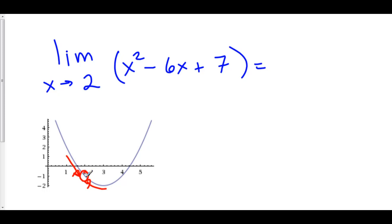Step one, plug it in. What does that mean? We're going to take 2, which is what x is approaching, and we're going to literally plug it in. Two squared is 4. Negative 6 times 2 is negative 12. Four minus 12 is negative 8.